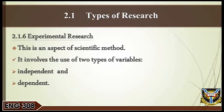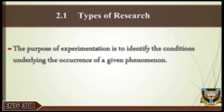Experimental research is an aspect of scientific method. It involves the use of two types of variables — independent and dependent. The independent variables are manipulated and the effects on the dependent variable are observed. The purpose of experimentation is to identify the conditions underlying the occurrence of a given phenomenon. Experimental research is also used to establish cause and effect, and is often used to determine the effect of a treatment.